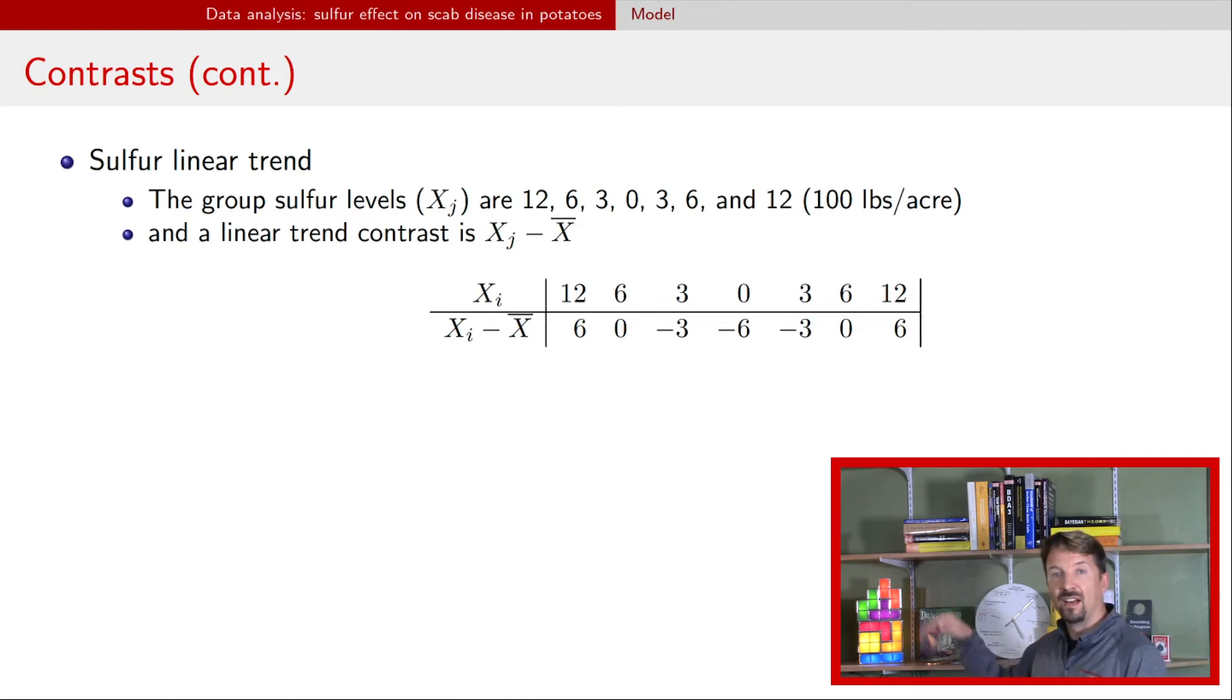The overall mean of that set of values is six. So when we subtract six, then we get this resulting linear trend. So we have the six, the zero, the negative three, negative six, negative three, zero, and six. That is going to be the coefficients for the associated means that we have for the fall and spring application and the no sulfur application.